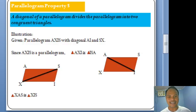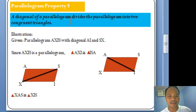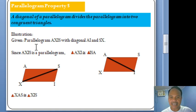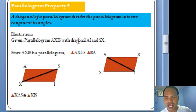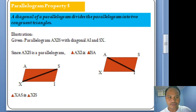Now let us introduce Parallelogram Property No. 5. It states that a diagonal of a parallelogram divides the parallelogram into two congruent triangles. For illustration, given parallelogram AXIS with diagonal AI, diagonal AI divides this parallelogram into two congruent triangles.